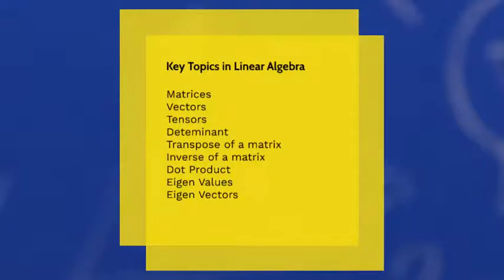Now we're coming to the key topics needed for machine learning. These are very basic: matrices, vectors, tensors, determinant. You need to know what is a transpose of a matrix, what is an inverse of a matrix. Transpose of a matrix is nothing but converting rows into columns and columns into rows. Inverse of a matrix, dot product, eigenvalues, eigenvectors, singular value decomposition, PCA and stuff like that. These are the basics to be understood well if you are heading towards deep learning and machine learning.